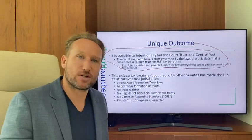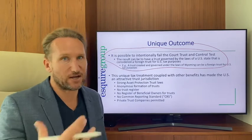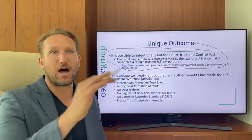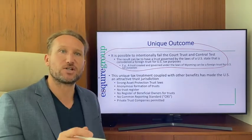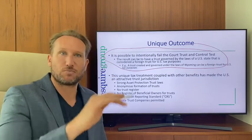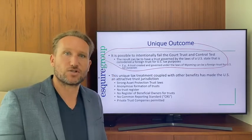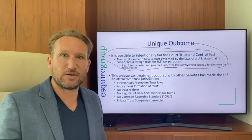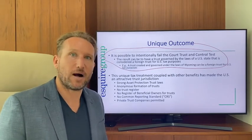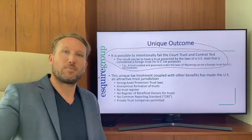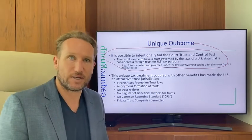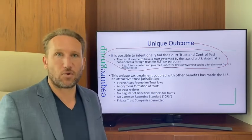The U.S. is also not a signatory to the Common Reporting Standard. The CRS is the automatic exchange of banking information between many countries. For example, if someone living in Germany has an account in Dubai, the Dubai government will report that to Germany, and Germany will know they have signature authority over those assets.